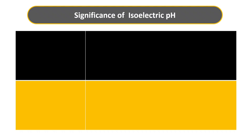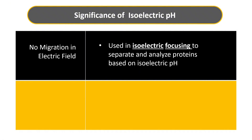The significance of isoelectric pH is based on characteristic features observed at that pH. First, there is no migration in an electric field — no electrophoretic mobility. Electrophoretic mobility is based on the fact that charged particles move in an electric field: positive particles move toward the negative electrode, and negative particles toward the positive electrode. At isoelectric pH the net charge is zero, so there is no movement. This characteristic is used in isoelectric focusing to separate and analyze proteins based on their different isoelectric pH values.